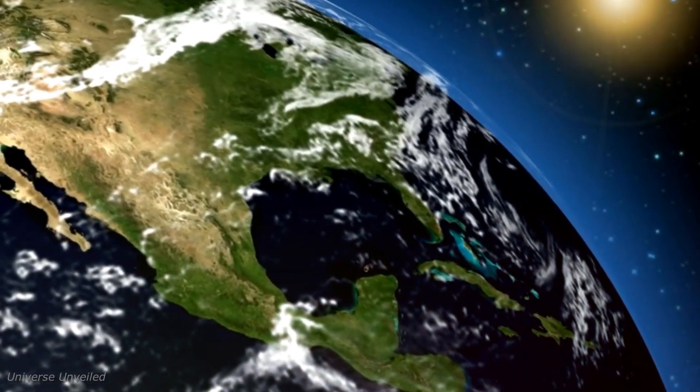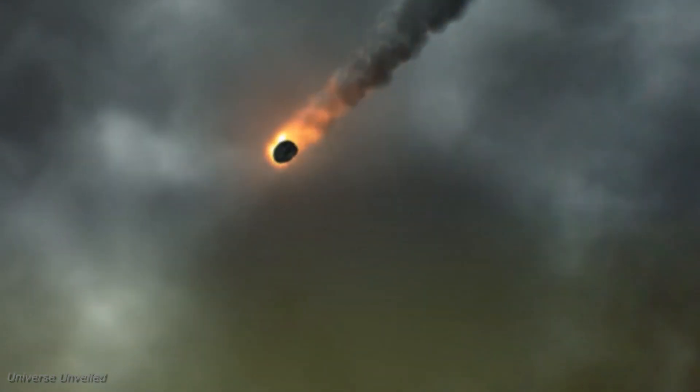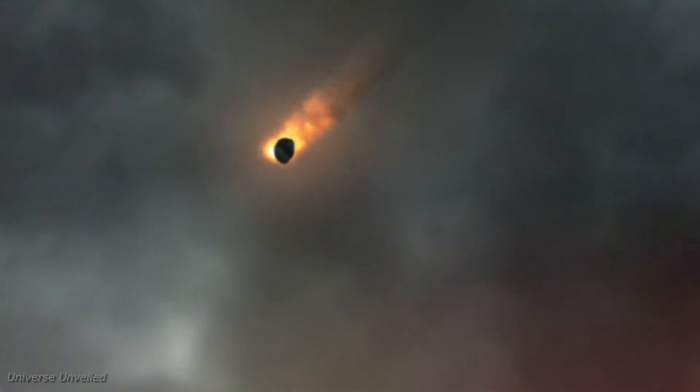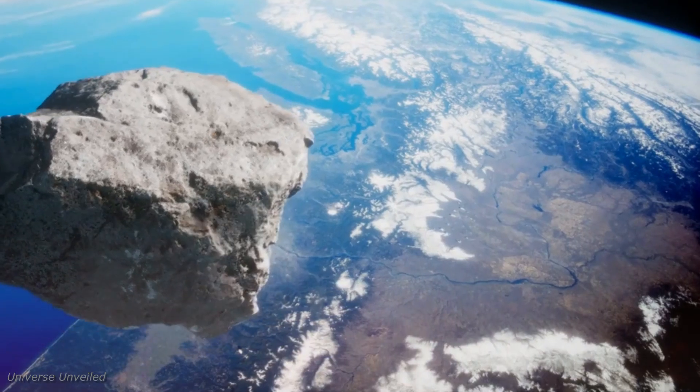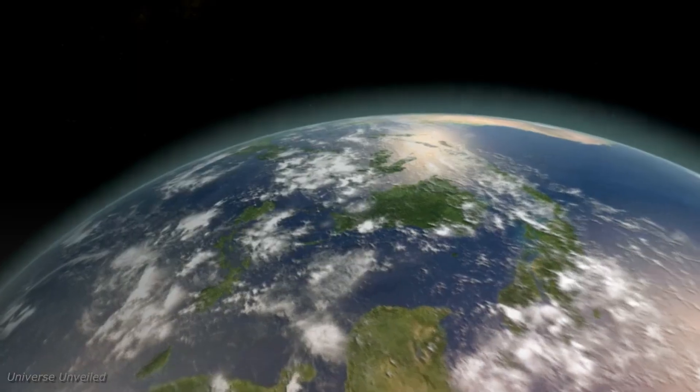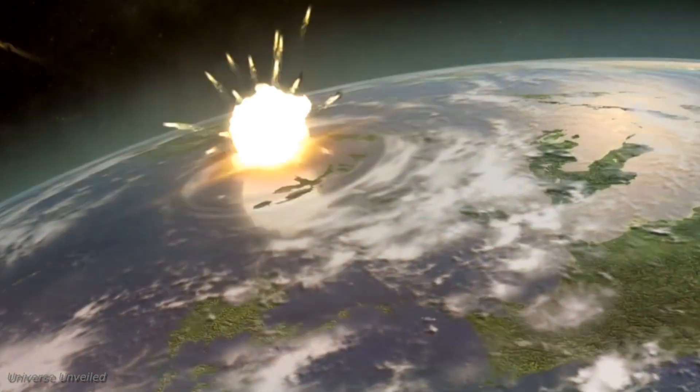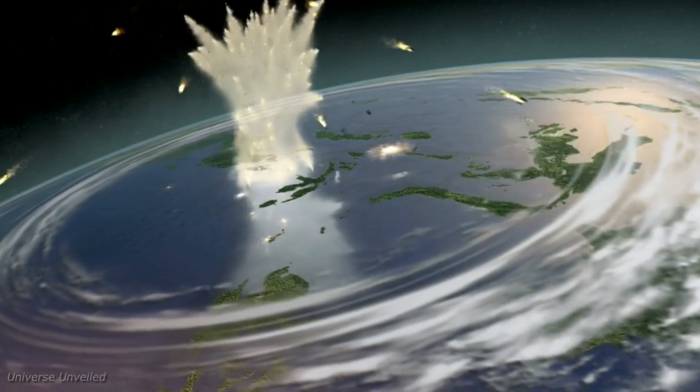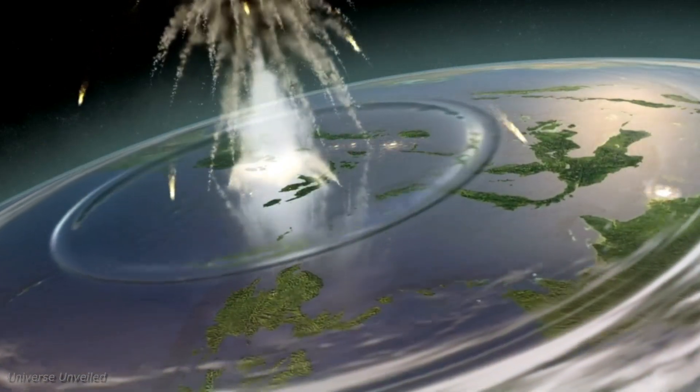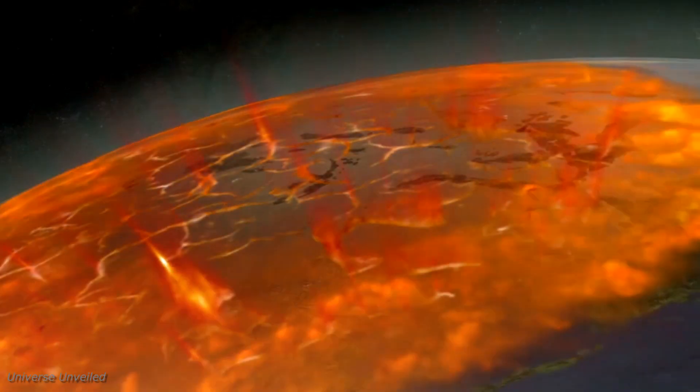Though the threat for 2029 has been averted, Apophis continues its cosmic dance with Earth, bringing it dangerously close to our planet on more than one occasion. Apophis' orbit brings it alarmingly close to Earth, closer than some of our satellites, making it not just a celestial spectacle but a potential threat. The asteroid has a series of close encounters with our planet, with the most significant flybys anticipated in the years 2029, 2036, and 2068.